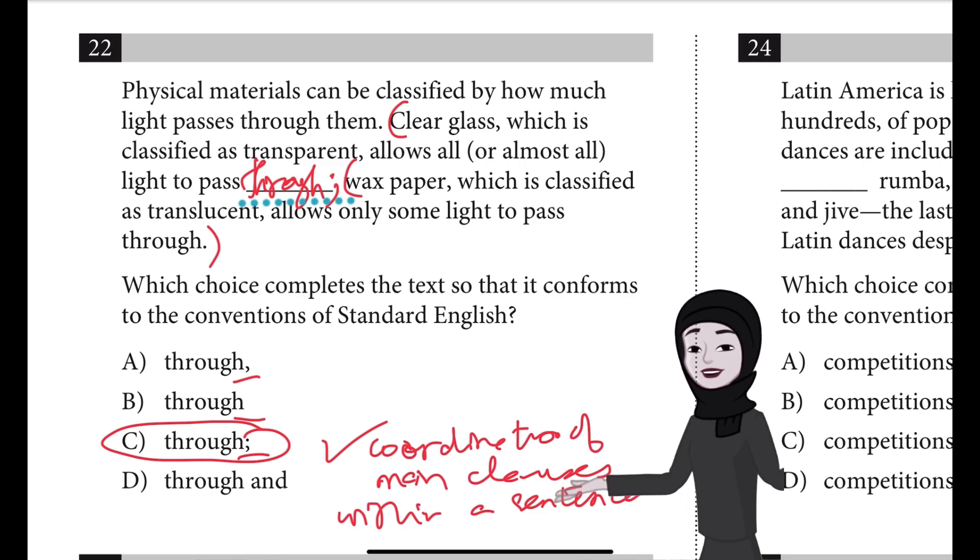A is incorrect because it results in a comma splice. Without a conjunction following it, a comma can't be used this way to join two main clauses.